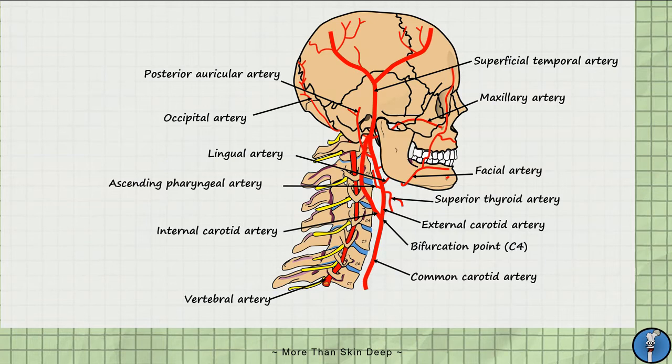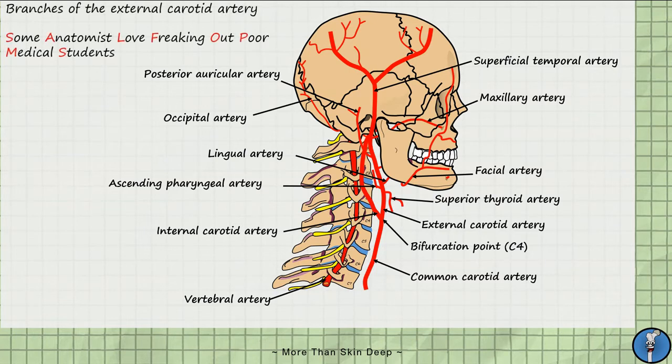An easy way to remember these branches is via another mnemonic. It is called, Some anatomists love freaking out poor medical students. Similar to the mnemonic we saw earlier, the first letter of each word matches the first letter of each branch.